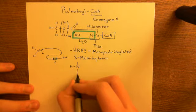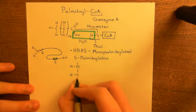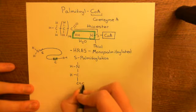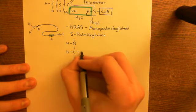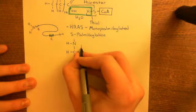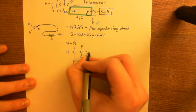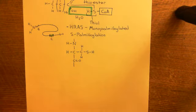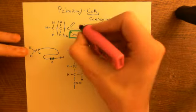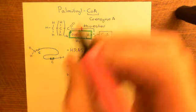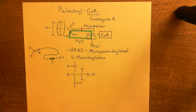For S-palmitoylation, you pick a cysteine residue in the middle of the polypeptide and add a palmitoyl group onto its thiol group. A molecule of palmitoyl-CoA is brought alongside the cysteine residue. The bond between the carbon and the sulfur of the palmitoyl-CoA molecule is cleaved — breaking the thioester link — and the bond between the cysteine sulfur and its hydrogen is also broken.